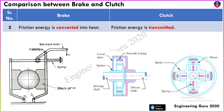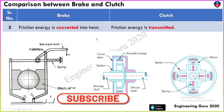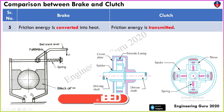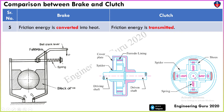Fifth point: in a brake, friction energy is converted into heat. Whenever the brake is applied, this block comes into contact with the drum and heat is generated due to friction. That is why friction energy is converted into heat in a brake.